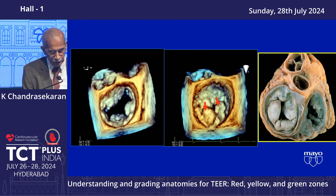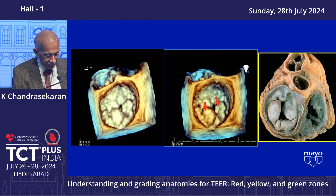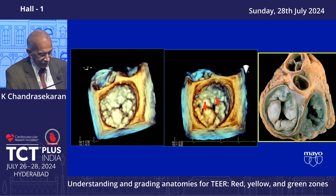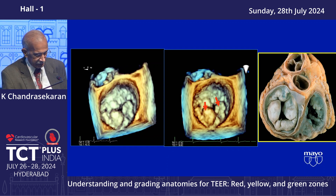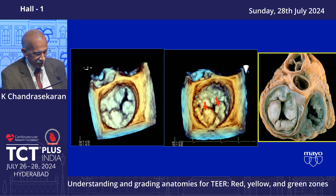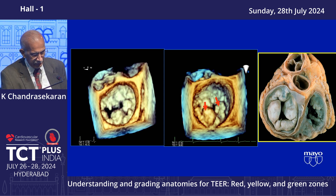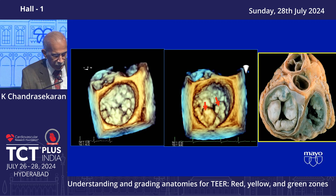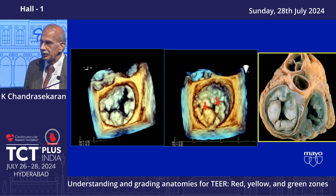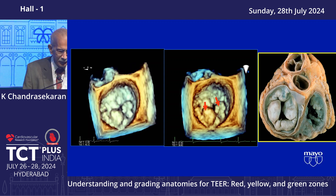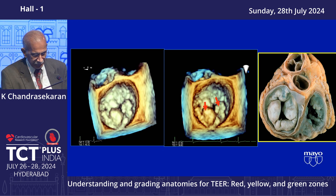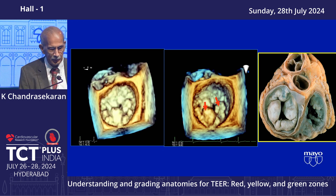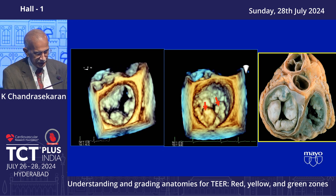This case fits into the red zone — not suitable for transcatheter repair. It looks like a Barlow's valve. The anterior leaflet, posterior leaflet, anterior commissural scallop, posterior commissural scallop, and P2 itself has two leaflets. Even most surgeons cannot achieve a satisfactory repair here; the repair result would not be good. Valve replacement is the ideal treatment. Some have attempted repair with unsatisfactory results.